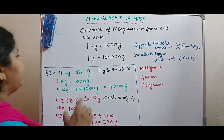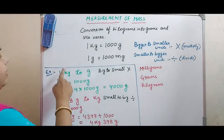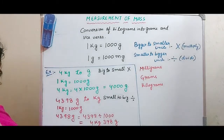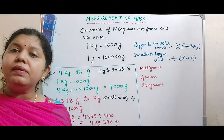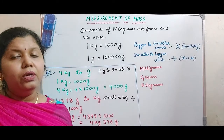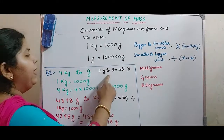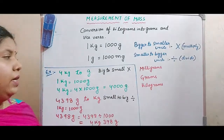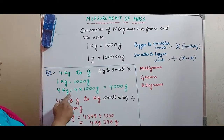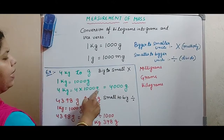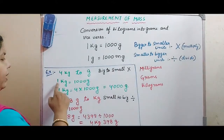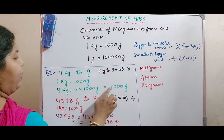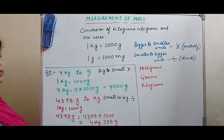Look at the first example. We have to convert 4 kg into grams. Kg is a bigger unit and grams is a smaller unit, so the conversion is from big to small — that is why we do multiplication. So 4 kg equals 4 into 1000 grams, because 1 kg equals 1000 grams. That is equal to 4000 grams.